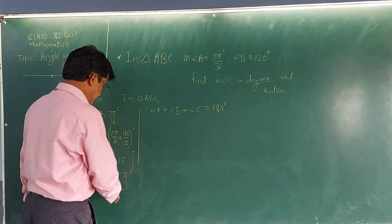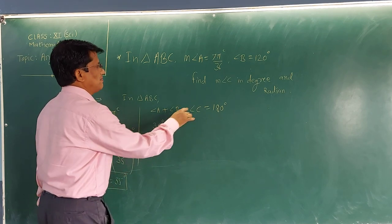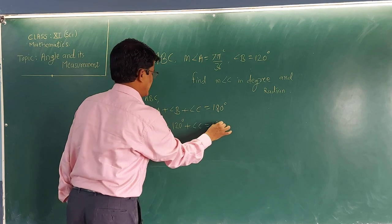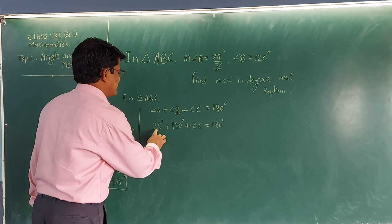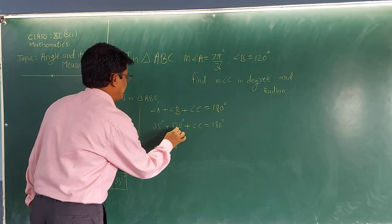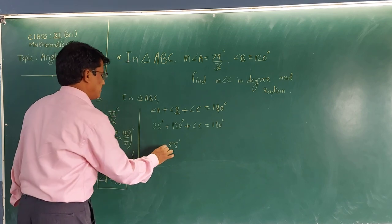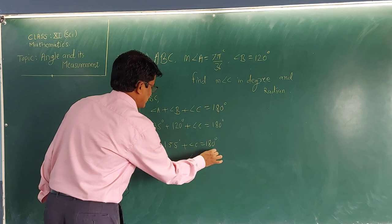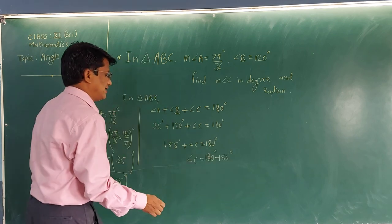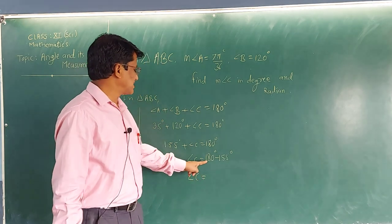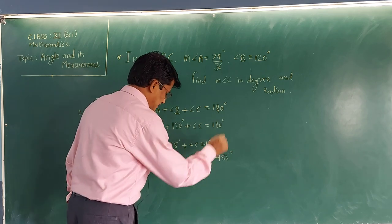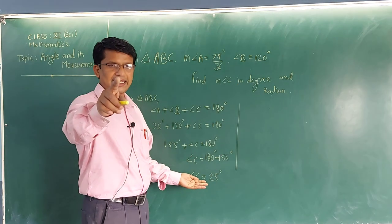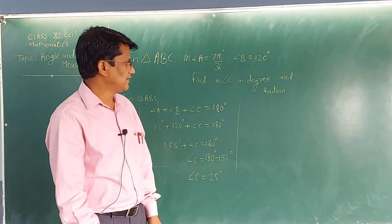Now using this in our basic rule: angle A plus angle B plus angle C equals 180. Putting values: 35 degrees plus 120 degrees plus angle C equals 180 degrees. The sum of 35 and 120 is 155 degrees, so 155 plus angle C equals 180. Hence angle C equals 180 minus 155, which gives us 25 degrees.